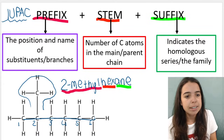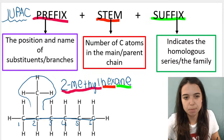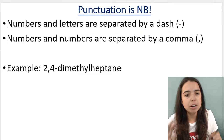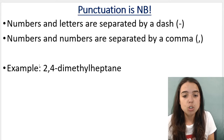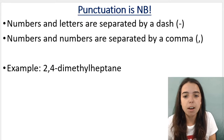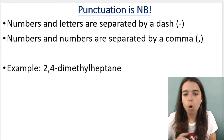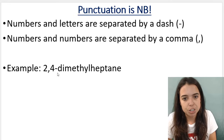Punctuation is important. For example, in the name 2,4-dimethylheptane — two and four are numbers, and numbers are separated by commas. Numbers and letters are separated by dashes.